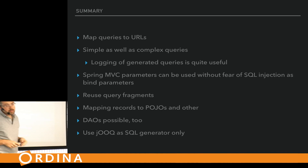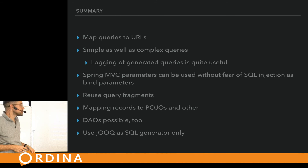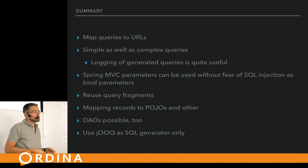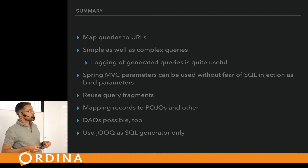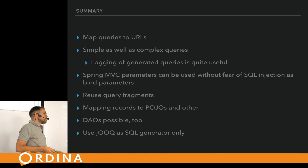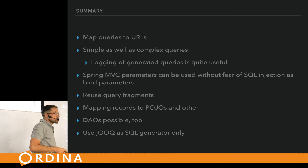What we've seen: easy options to map queries to URLs, queries ranging from very simple to very complex, good logging for queries, Spring MVC parameters can be used without fear of SQL injection (type-safe), reusable query fragments, POJOs and other types, records, and the option to use a data access object approach — either generating DAOs or wrapping queries in repositories. One can also use jOOQ purely as a SQL generator.